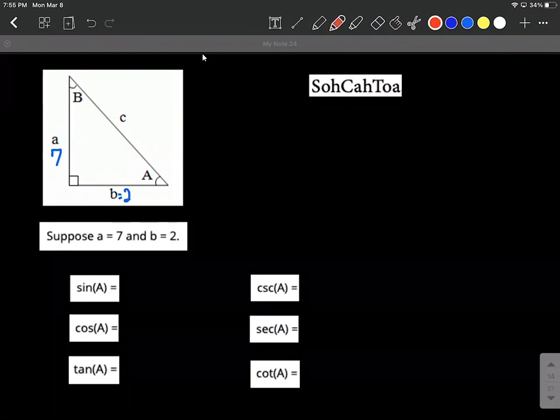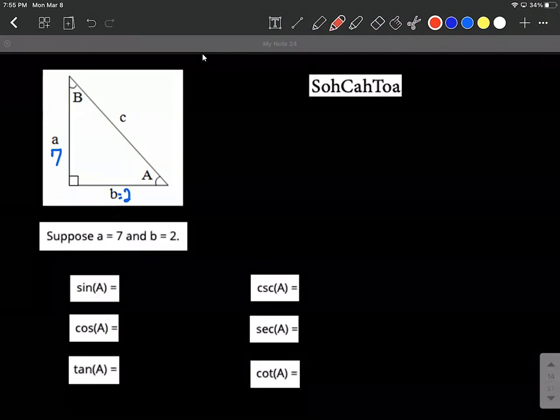We're primarily focused on finding the six trigonometric ratios for this and you'll notice down below that we're looking for sine of A, cosine of A, tangent of A. So we're really focused on A as being the angle that we're looking at. So based on that I'm going to label the sides.